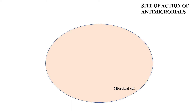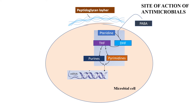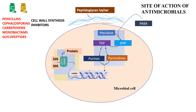The mechanism of action of antimicrobials targets specific sites in microbial cells. Bacteria have a cell wall called the peptidoglycan layer. Microbes synthesize their own DNA from para-aminobenzoic acid, which converts to dihydrofolic acid, tetrahydrofolic acid, purines, pyrimidines, and then DNA. From DNA, mRNA is synthesized, and then proteins. Bacterial ribosomes consist of 30S and 50S subunits, unlike human 70S subunits.